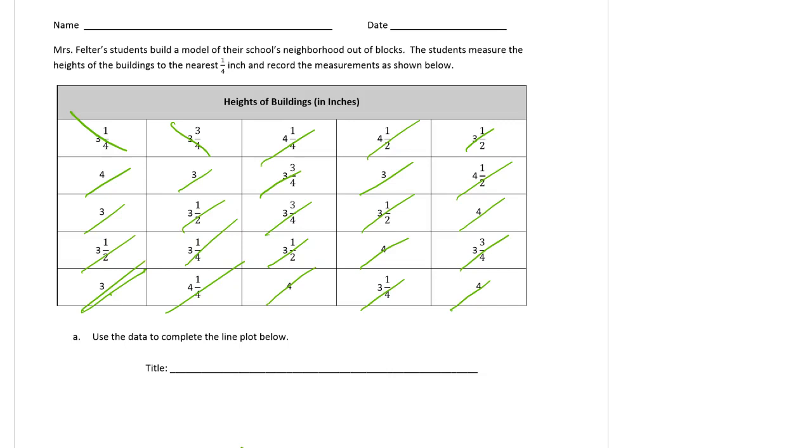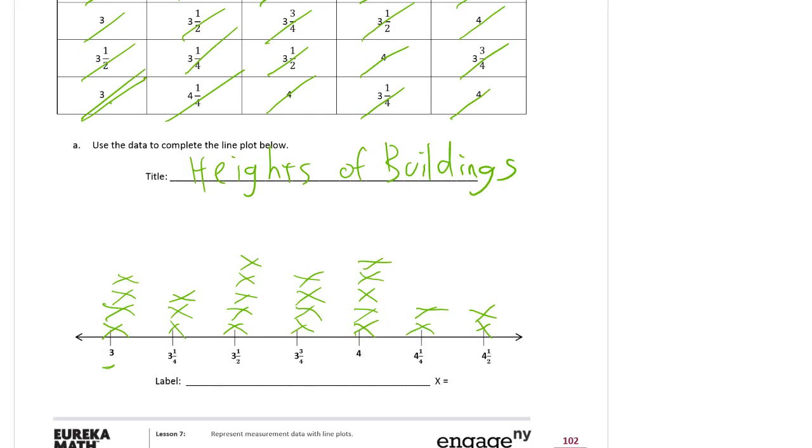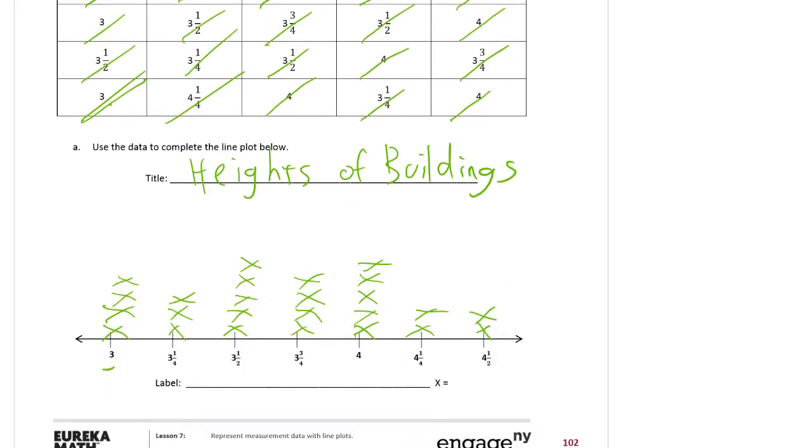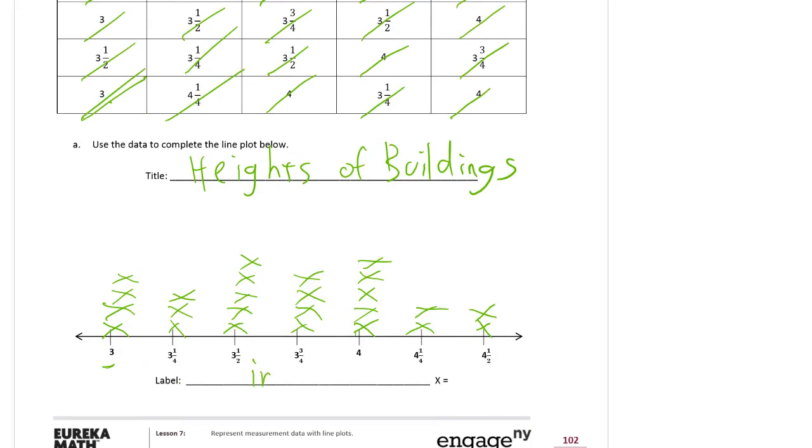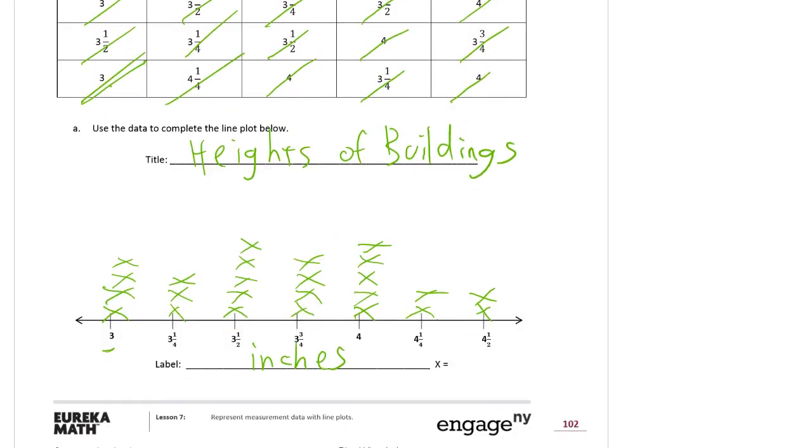We need a title for this line plot. We'll just use the same as the title here, but we don't need to write the in inches part. That part we're going to put underneath the line. So this should be heights of buildings. And the label we want is inches. And each x equals one building.